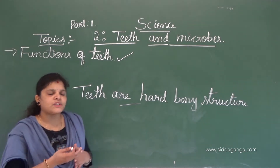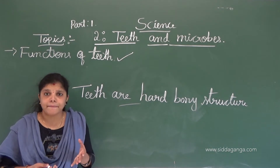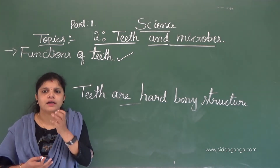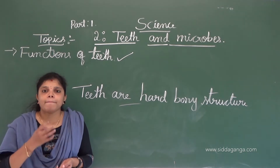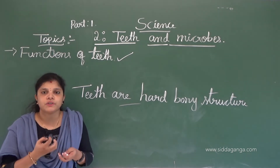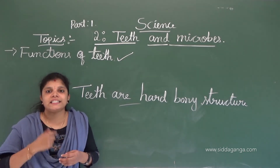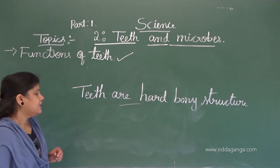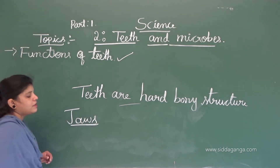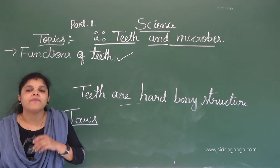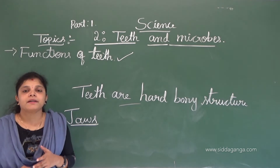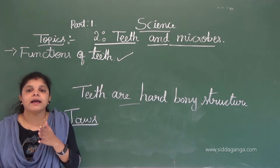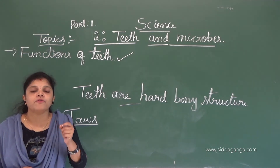These teeth are attached to the jaws. They help to bite or chew the food particles. If you want to bite fruits or vegetables, you use your teeth. These teeth are attached to the jaws — upper jaw and lower jaw — and help in biting and chewing foodstuff.